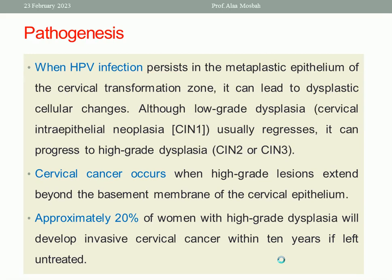The pathogenesis: the story starts with human papilloma virus infection and its persistence in metaplastic epithelium of the cervical transformation zone. This area is the most dangerous site — the transformation zone — which is the area between the primary and secondary squamous-columnar junction, where metaplasia happens and columnar epithelium changes to squamous epithelium. With persistent HPV infection in the metaplastic epithelium of the cervical transformation zone, it can lead to dysplastic cellular changes.